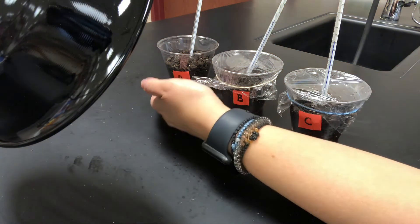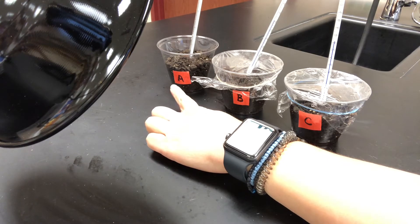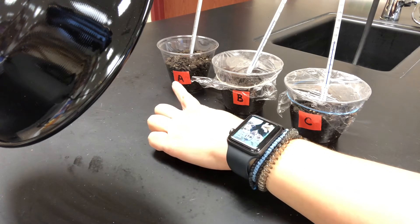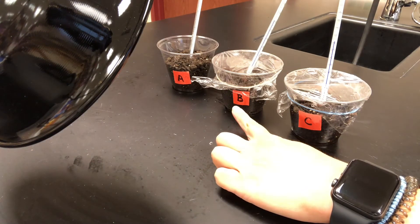Cup A represents what we call an open system, where the soil is not covered and open to its surroundings. Cup B is covered in plastic wrap.